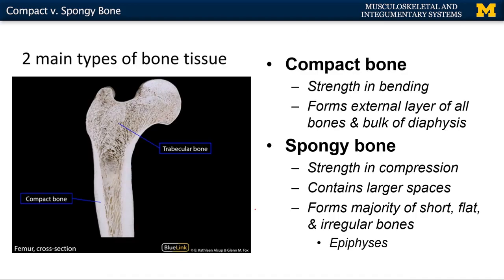Now, let's look at the differences between the two and why they're located in different areas. Compact bone, as you would think, is more solid, so it's really important in terms of resisting bending. It forms the external layers of all bones — so even bones made up of almost exclusively spongy bone are going to have a layer of compact bone.